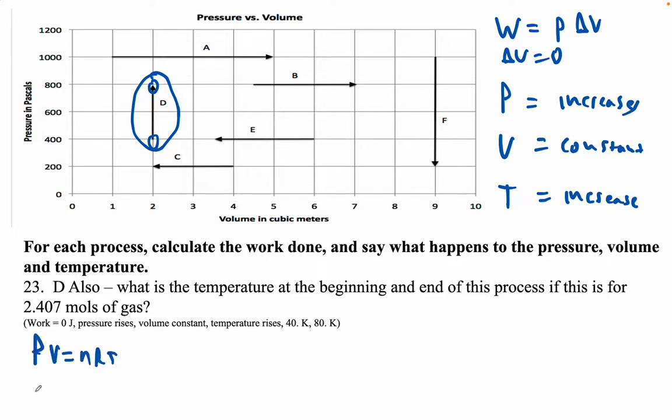At the beginning of D, our pressure is 400, our volume is 2, our moles are 2.407, and R is 8.31.